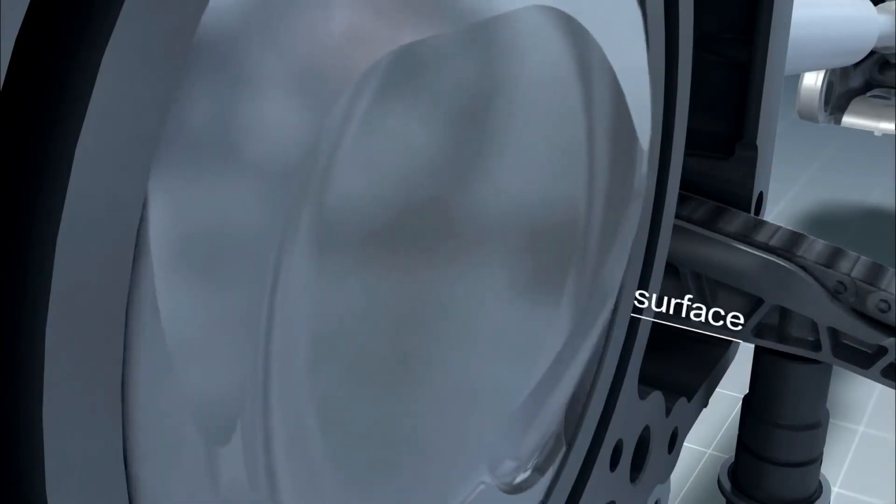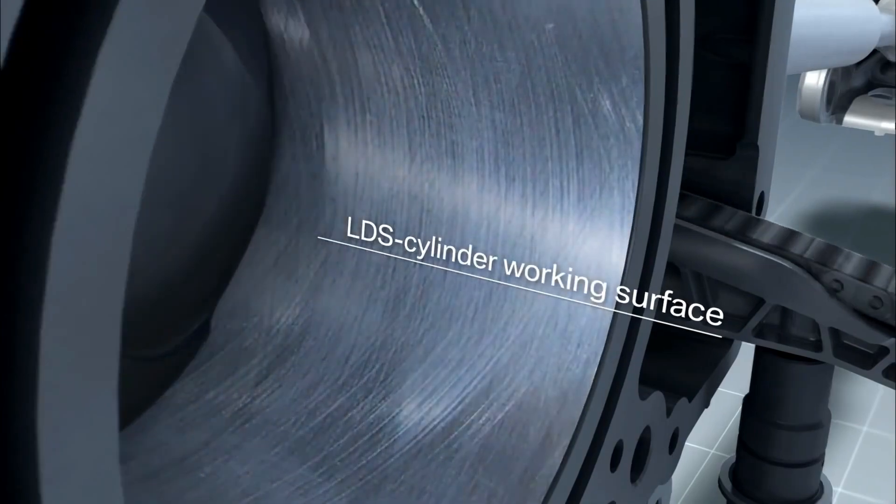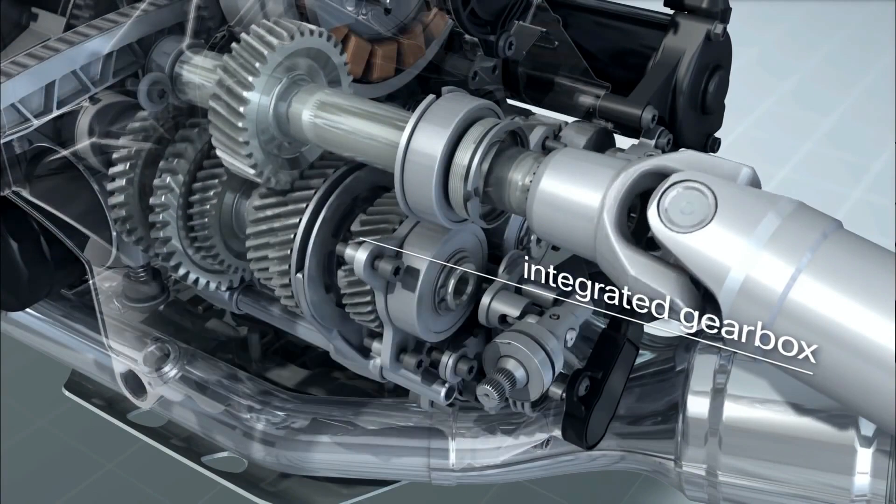In the patent, the model used is the R from the GS range, with the typical liquid-cooled boxer engine used by the brand. It could be the rumored BMW R1300GS.